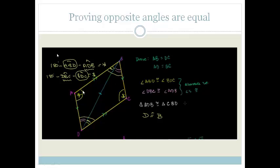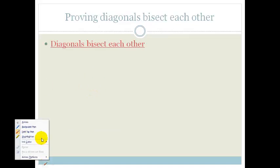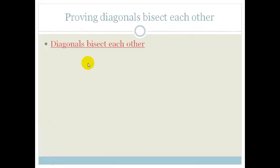How would you do this in exams? You would just prove that these two triangles are congruent, just like we did before, and then relate the angles instead of the sides. Now let's move on to another property — the fact that diagonals bisect each other.